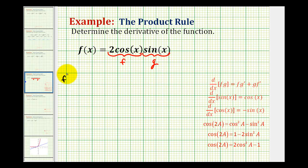So we'll have f'(x) equals the first function, which is 2cos(x), times the derivative of the second function. The derivative of sin(x) is cos(x) plus the second function, which is sin(x), times the derivative of the first function, and the derivative of 2cos(x) would be negative 2sin(x).